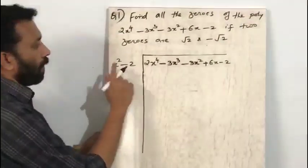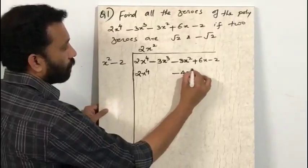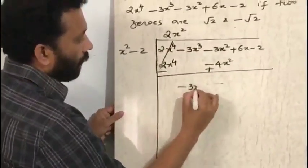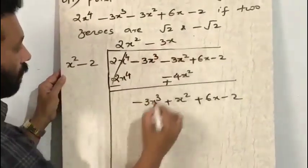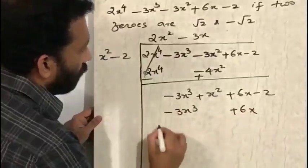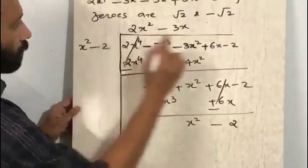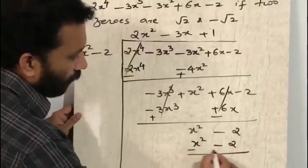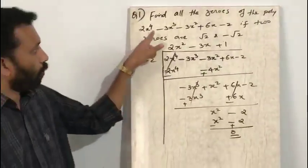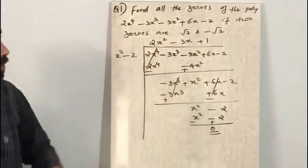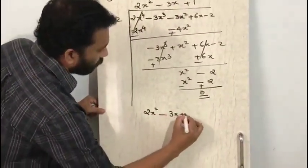Dividing 2x⁴ by x² gives 2x². Then 2x² multiplied by (x² − 2) gives 2x⁴ − 4x². Changing the sign: −3x³ + x² + 6x − 2 remains. Dividing −3x³ by x² gives −3x; −3x times (x² − 2) gives −3x³ + 6x. Changing signs again: x² − 2 remains. Dividing x² by x² gives 1; 1 times (x² − 2) gives x² − 2, remainder 0. The quotient is 2x² − 3x + 1. Equating the quotient to 0: 2x² − 3x + 1 = 0.